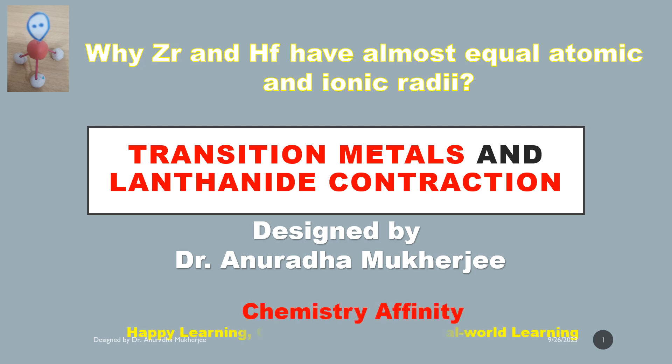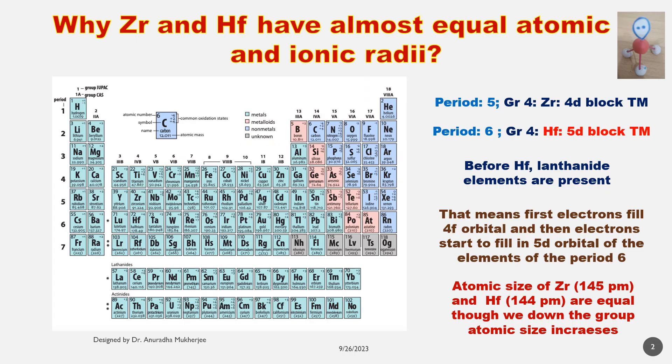Here I am going to explain why zirconium and hafnium have almost equal atomic and ionic radius. Zirconium is present in period number 5 and hafnium in period number 6, and they are in the same group. We know in a group the atomic size increases down the group.